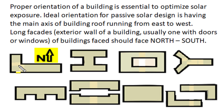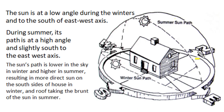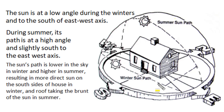The longer or main axis of the building roof should run from east to west. The long façade — the exterior wall of the building which usually has doors and windows — should face either north or south direction. So maximum fenestration, openings, doors, and windows should be placed on the longer side of the building facing either north or south. The sun path on any building depends upon the latitude of that land area on the earth globe, and sun path is always from east to west.